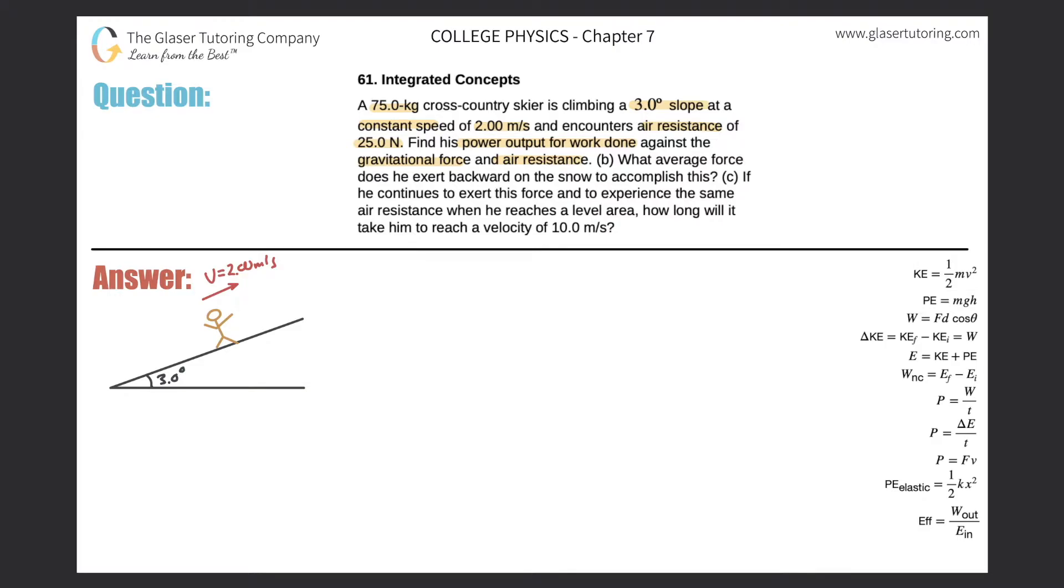So if we need to find power and given the variables we're given, we're given a velocity here. It sounds like this equation would fit the bill, that the power is equal to the force applied multiplied by the velocity of the object. So I know the velocity. It's two meters per second.